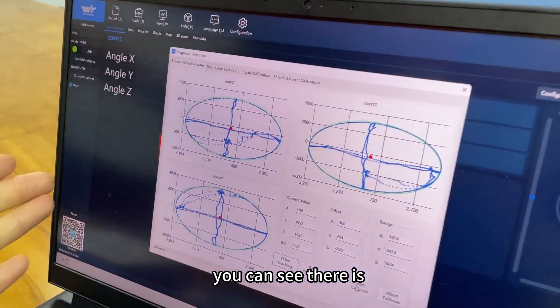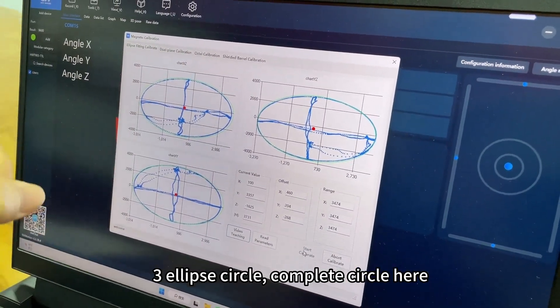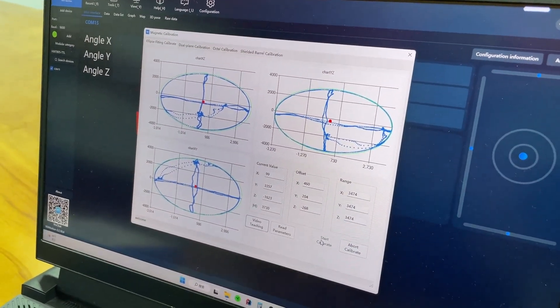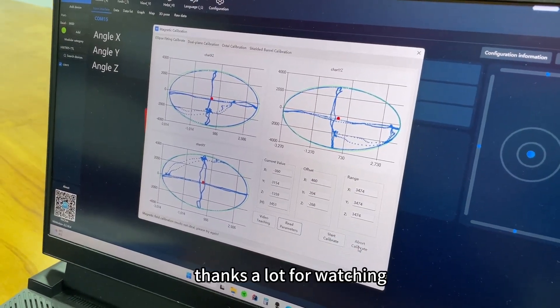...you can see there are three ellipse circles, complete circles here, which means the calibration is very well calibrated. That's it for the calibration. Thanks a lot for watching.